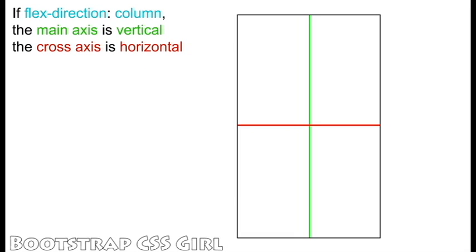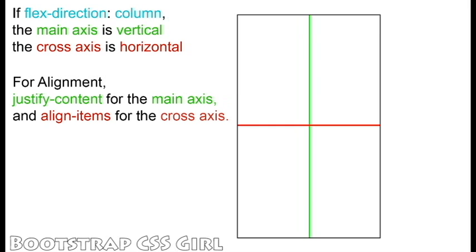Now we will change the direction of our FlexItems by setting the FlexDirection property to Column. With FlexDirection set to Column, our FlexContainer has a vertical main axis starting at the top and going to the bottom, and a horizontal cross-axis which starts at the left and goes to the right. The cross-axis is perpendicular to the main axis. Remember that we use JustifyContent to align FlexItems along the main axis, and AlignItems to align along the cross-axis.